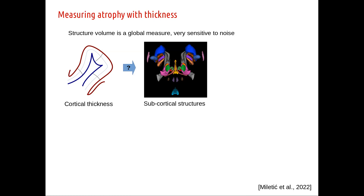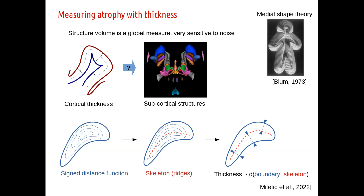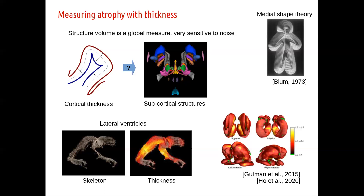We were also frustrated with volume measurements, especially for small structures where a few voxels' difference in segmentation makes a big difference. So we developed an approach based on classical medial shape theory: create a distance function starting from the boundary, build the skeleton indicating the place most inside the structure, and then simply measure the distance between the two. This gives a generalization of cortical thickness for any shape, providing local measurements — similar to work by Boris Gutman and colleagues using this type of definition on the ADNI dataset to show aging effects.